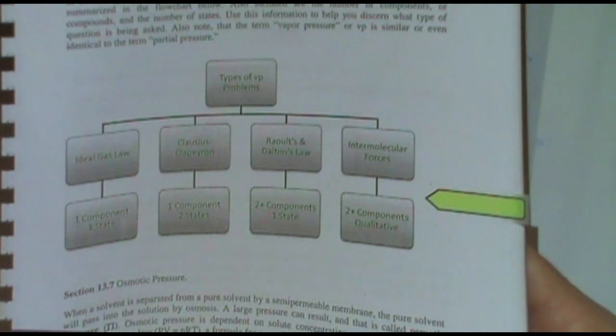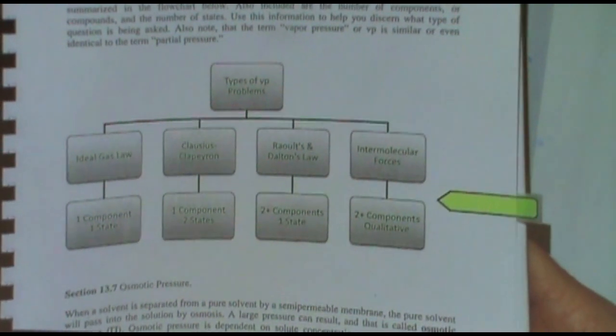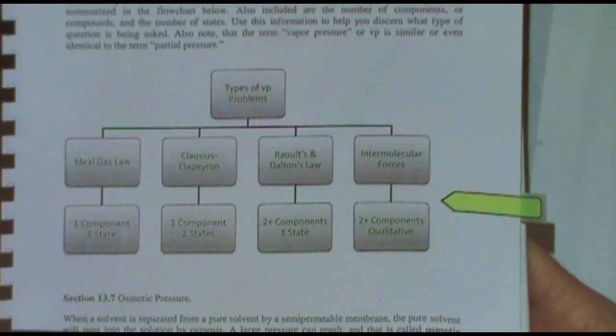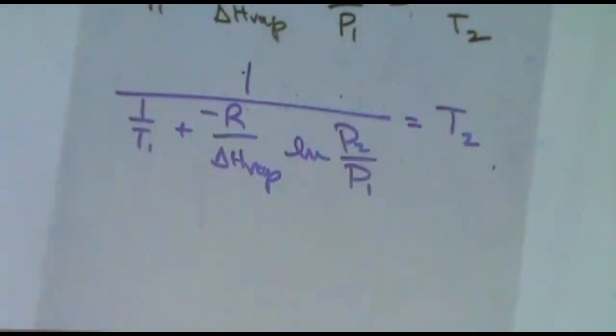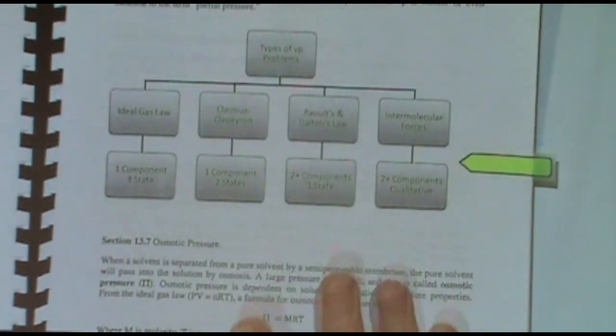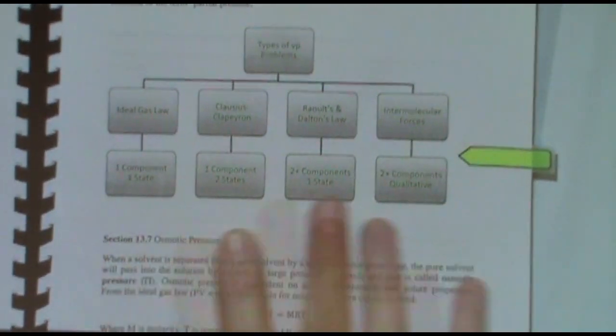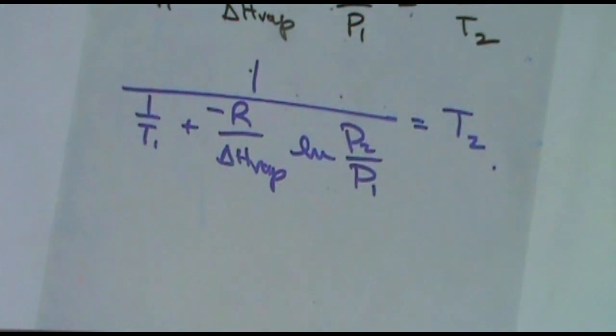So if there's no numbers but there's multiple compounds, you're probably talking about this right there. Those are the common vapor pressure problems you would come across. Person who asked this, did you want more information than that? And if so, what would that be? Okay, so it's mostly discerning what kind of problem you're entering into, and these are the four we've seen.